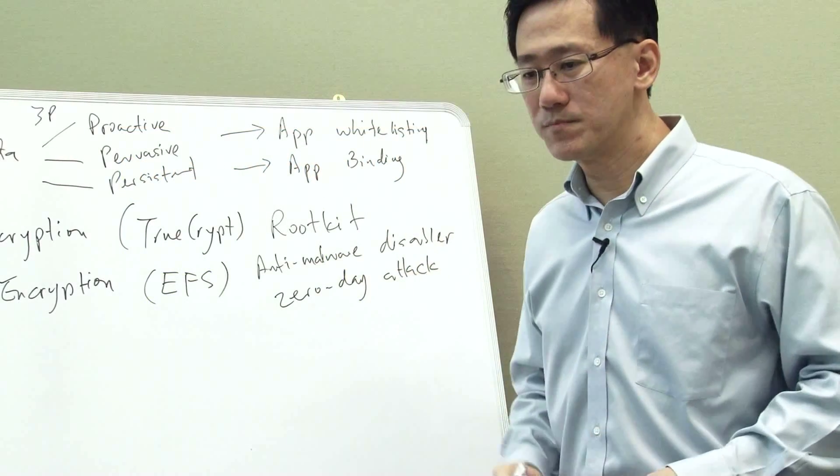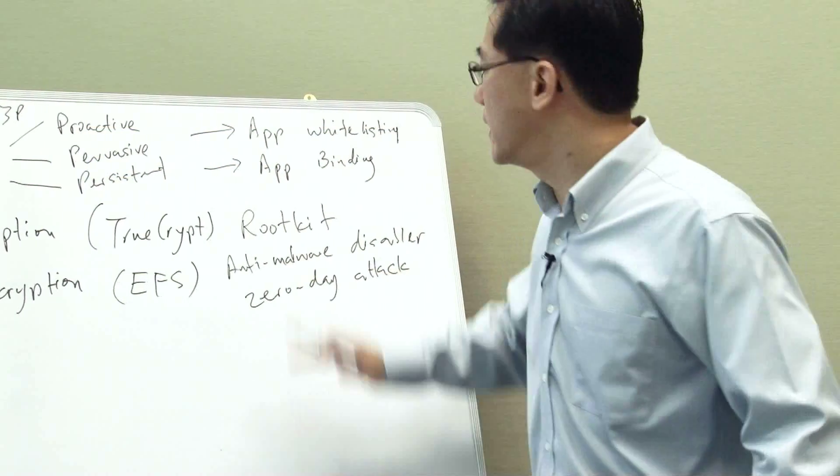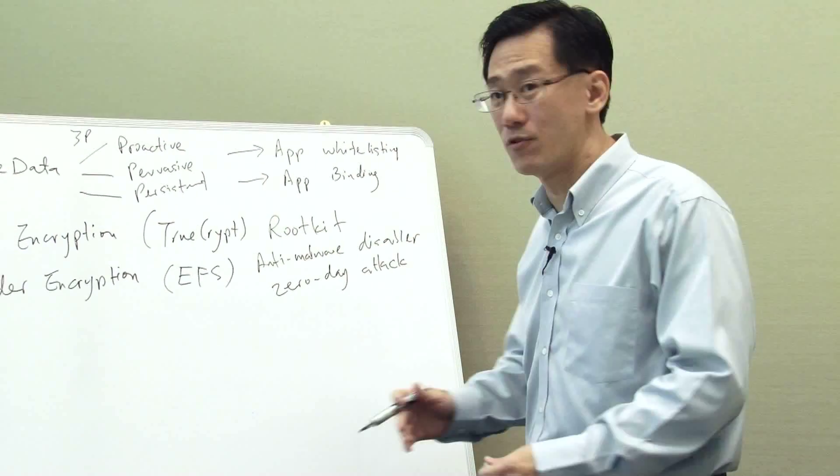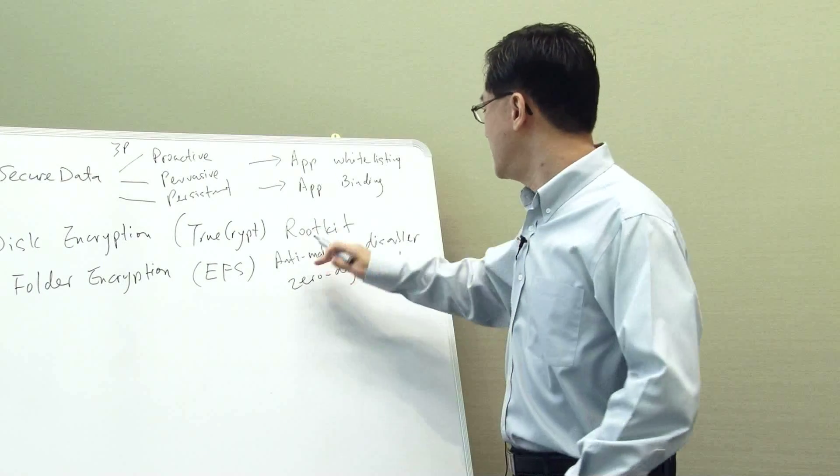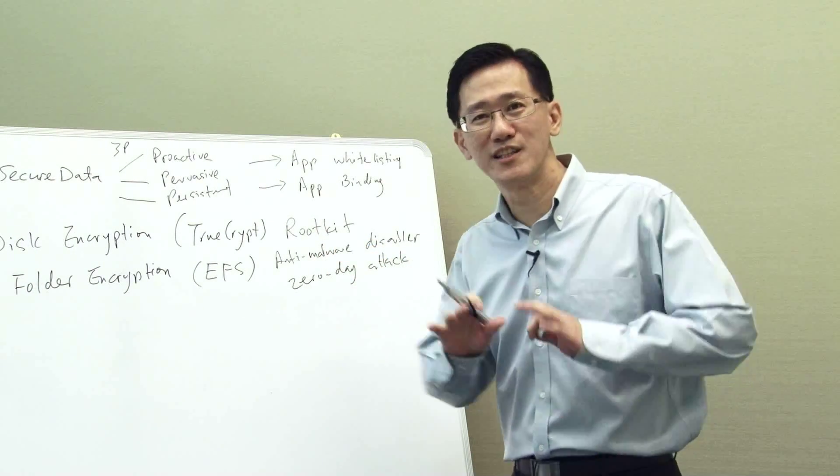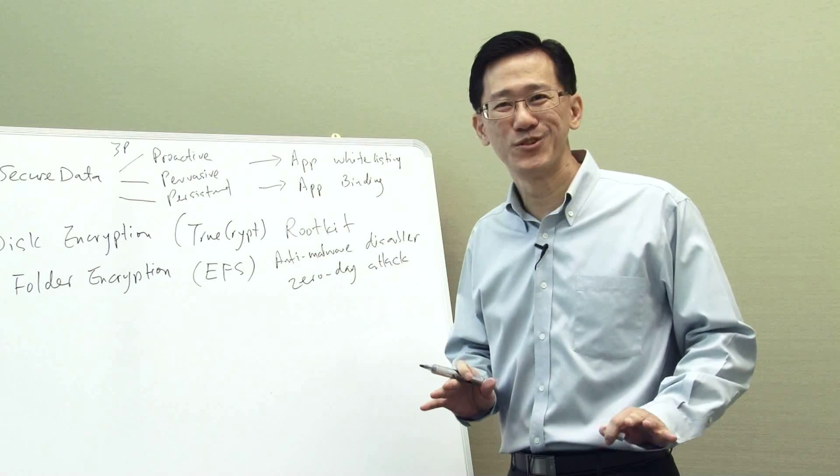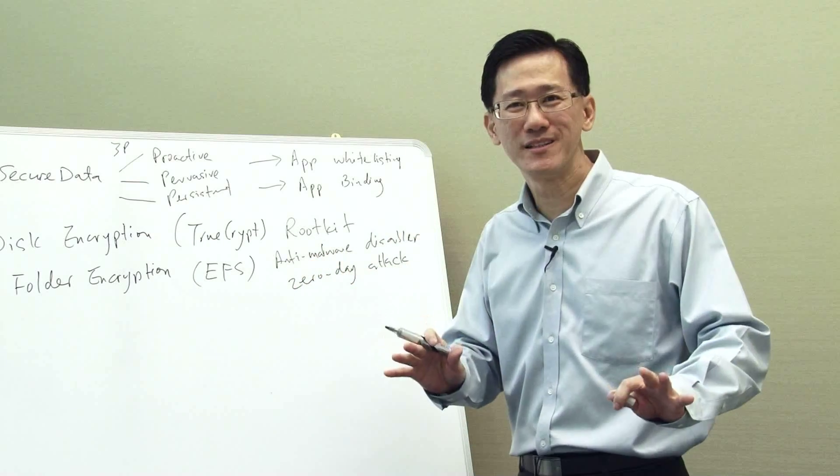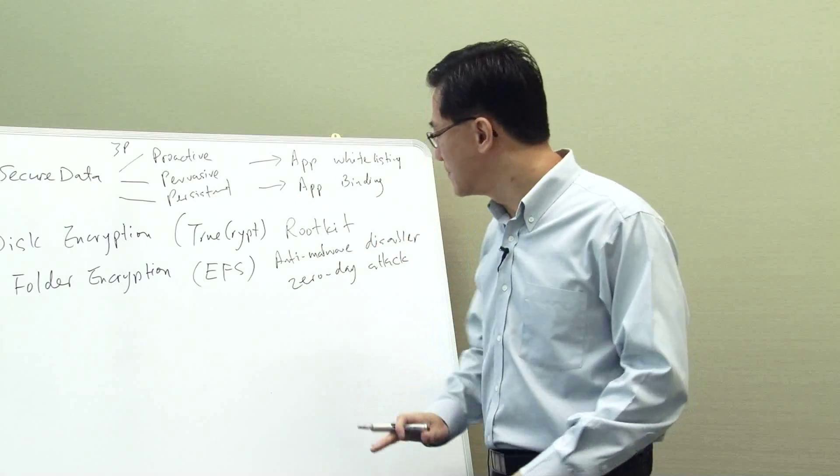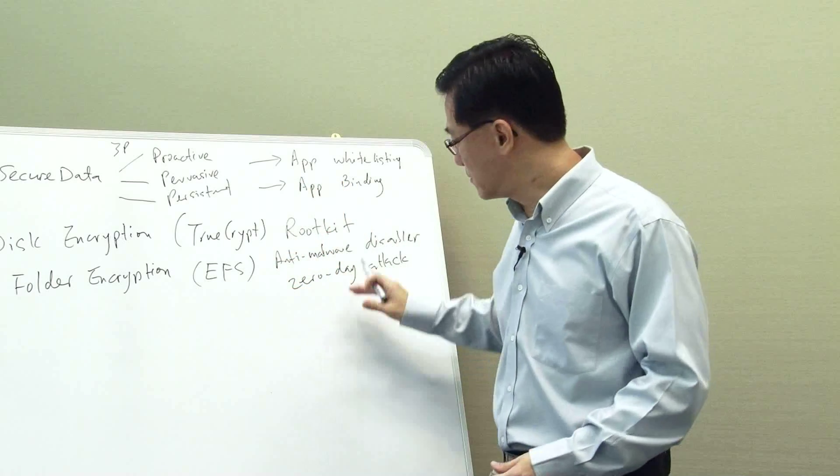So rootkit is basically those malware that stay so low level that all the anti-malware, be it your antivirus or application whitelisting, cannot see them, therefore cannot block them. The anti-malware disabler basically are those malware that first, when they first came in, they disable all the anti-malware engine. So when the user reboots or whatever later, you're wide open. They can inject any malware into your system without being stopped. Zero-day attacks are a big category and I'll talk about it later in more details.